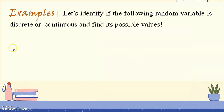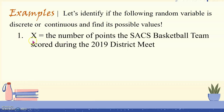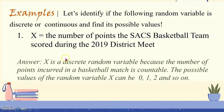For example, let's identify if the following random variable is discrete or continuous and find its possible values. Number 1: the random variable X is the number of points the SAC's basketball team scored during the 2019 district meet. X is a discrete random variable because the number of points scored in a basketball match is countable. The possible values of X can be 0, 1, 2, and so on.